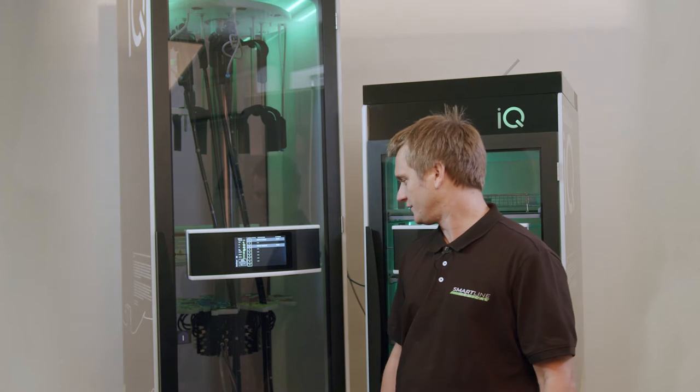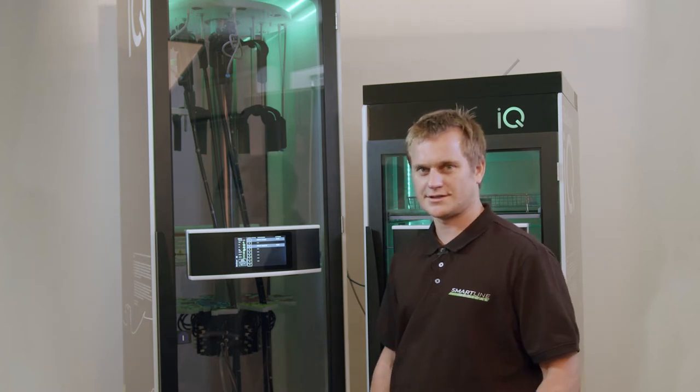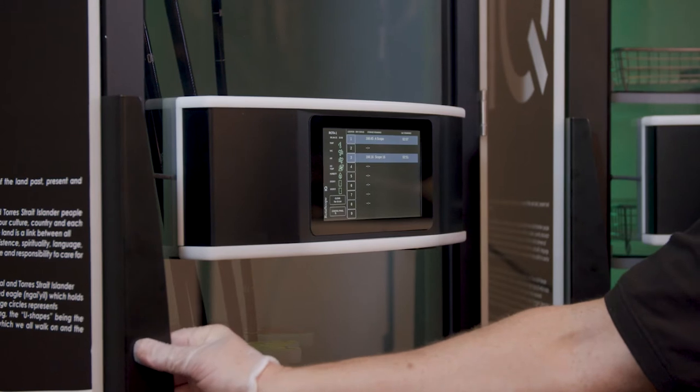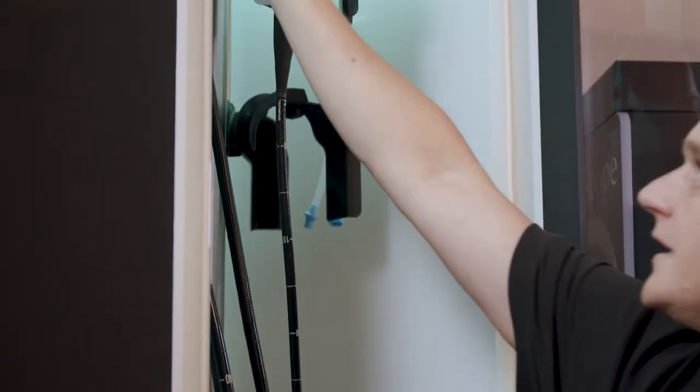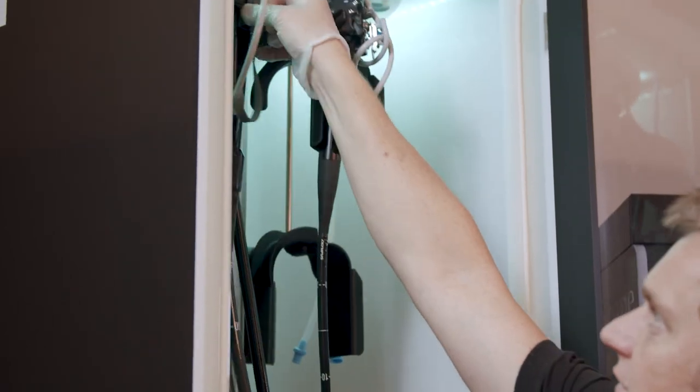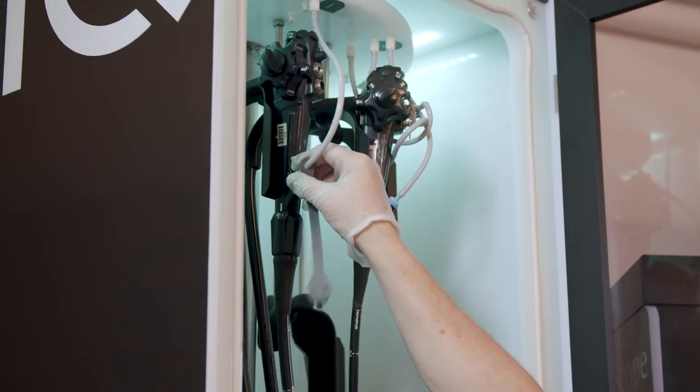So removing from a rotoscope cabinet is the complete reverse of storing it. Opening the door to begin, disconnect the hoses. You can just start at the top.